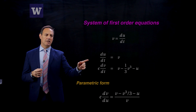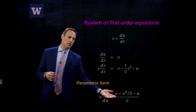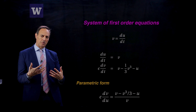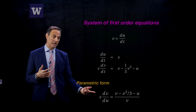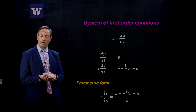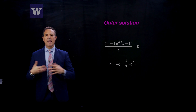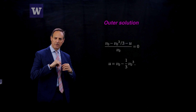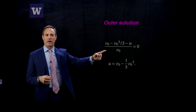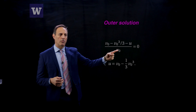In parametric form, dividing the two equations gives: epsilon dv/du = (v − v³/3 − u) / v. This gives a lot of information for representing the solution in the phase plane. For the outer solution, epsilon goes to zero, so that derivative drops out and I just get a cubic equation to look at. Expanding and dropping the epsilon term at leading order gives: v₀ − v₀³/3 − u₀/v₀ = 0.